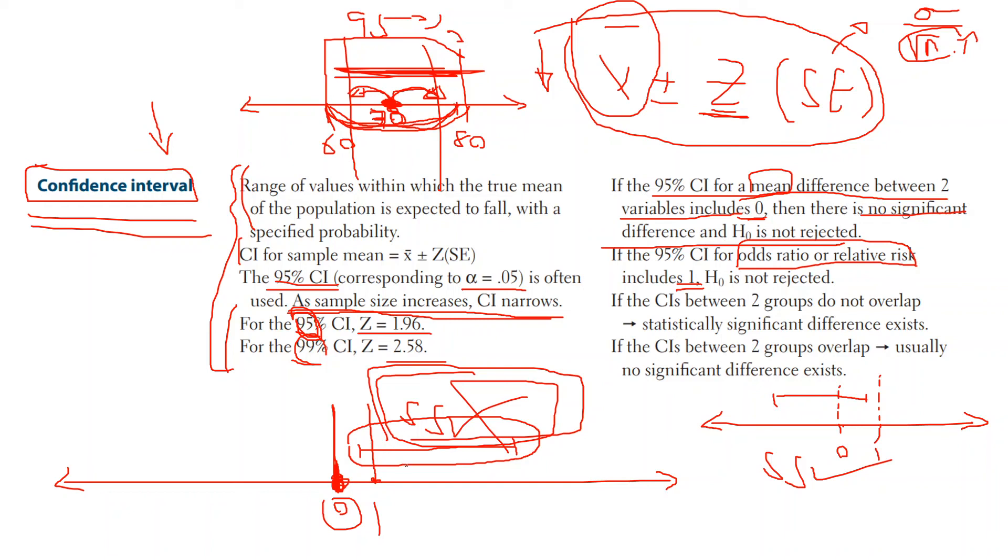If they include the value we're interested in, it is not statistically significant. Therefore, we reject the alternate hypothesis, we accept the null hypothesis. And if it doesn't include the number we're interested in, we reject the null hypothesis, we accept the alternate hypothesis. And this is pretty much what we said here. If they do not overlap, then there is statistically significant. If they do overlap, then there is usually no significant difference.